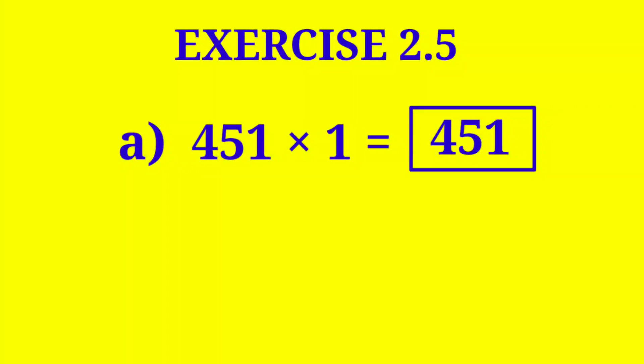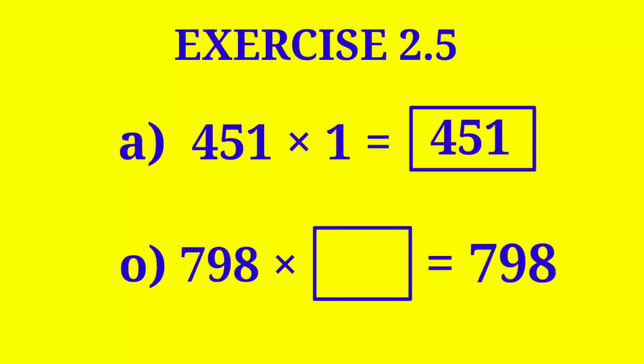Now it's part O. 798 multiplied by a blank equals 798. So with what number do we multiply 798 and we get the same number as our answer? Yes, the number is 1. 798 multiplied by 1 equals 798.